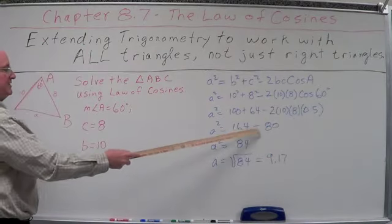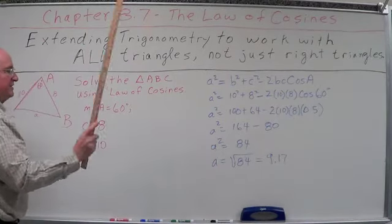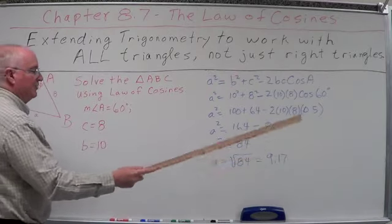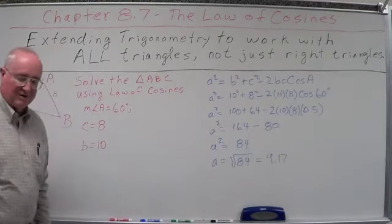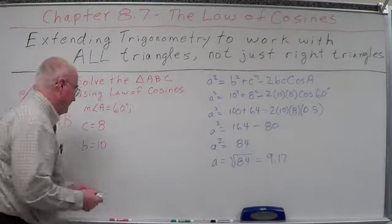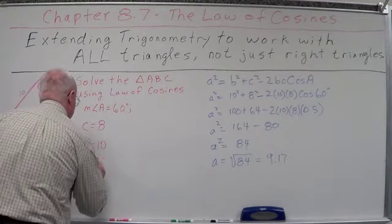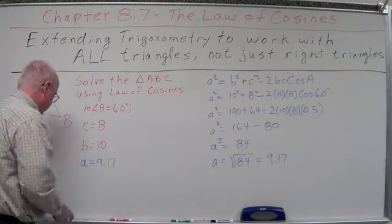So, that is A squared equals 164 minus 80, or A squared equals 84. A equals square root of 84, or 9.17, approximately. So, we have A equals 9.17.